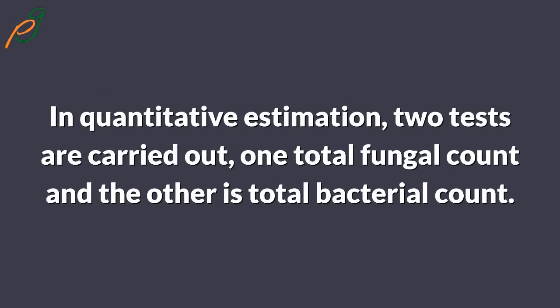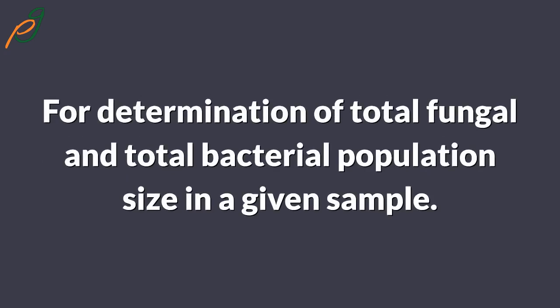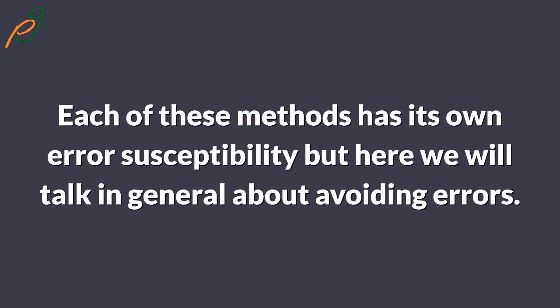In quantitative estimation, two tests are carried out: total fungal count and total bacterial count. For determination of total fungal and total bacterial population size in a given sample, four methods are available: (a) pour plate method, (b) filtration method, (c) serial dilution method, and (d) spread plate method. Each of these methods has its own error susceptibility.